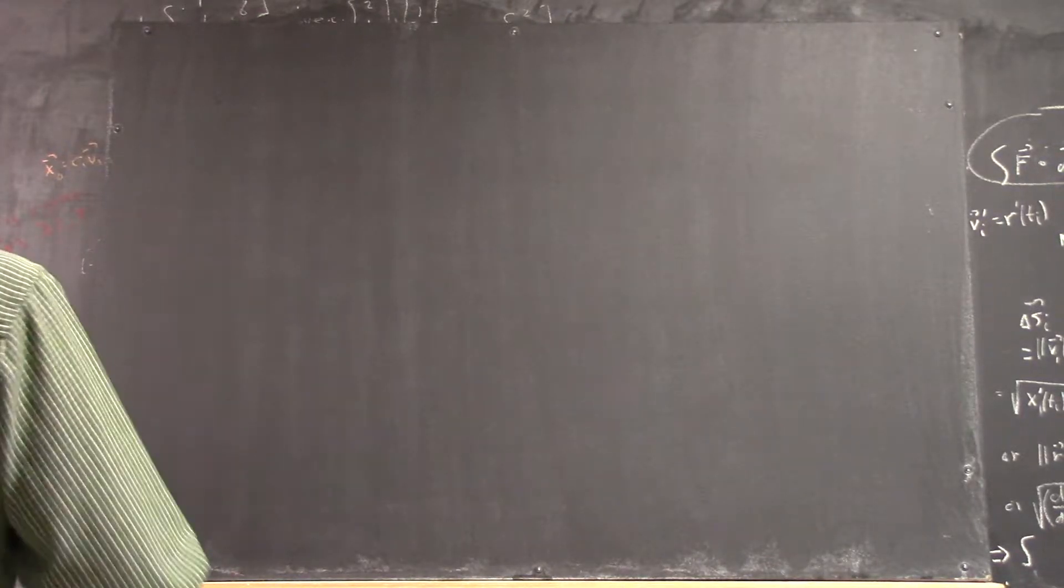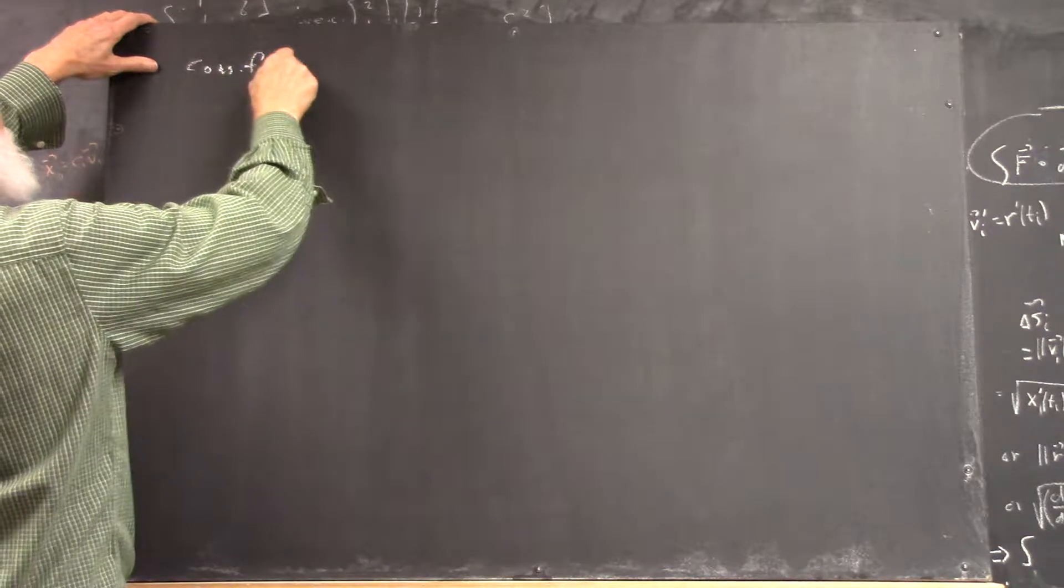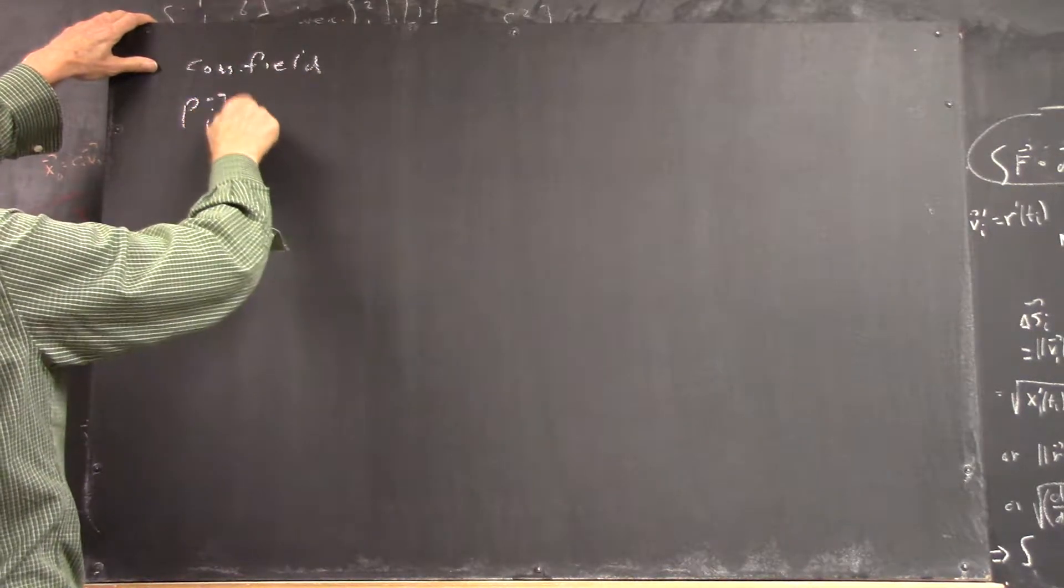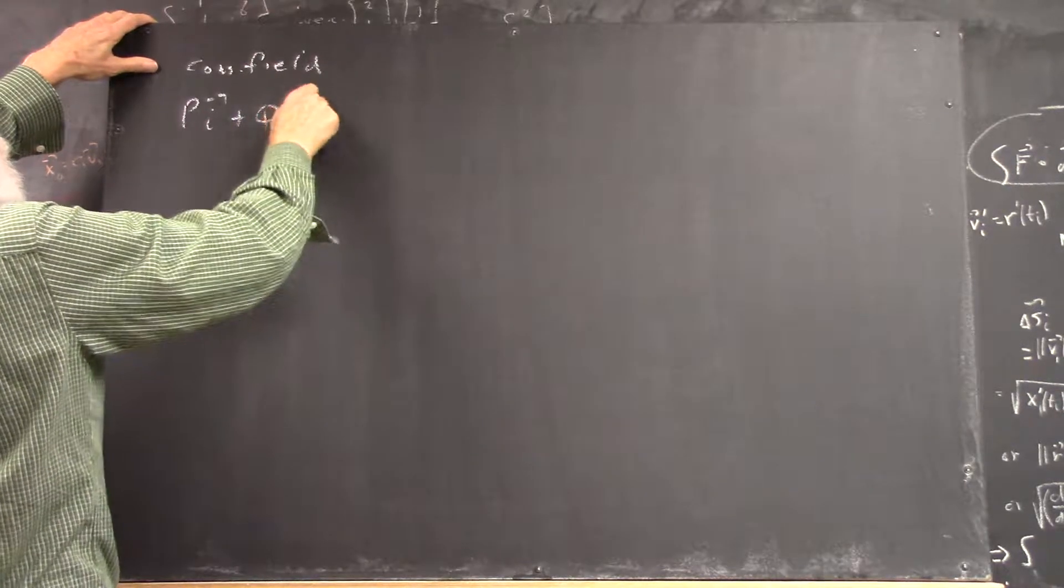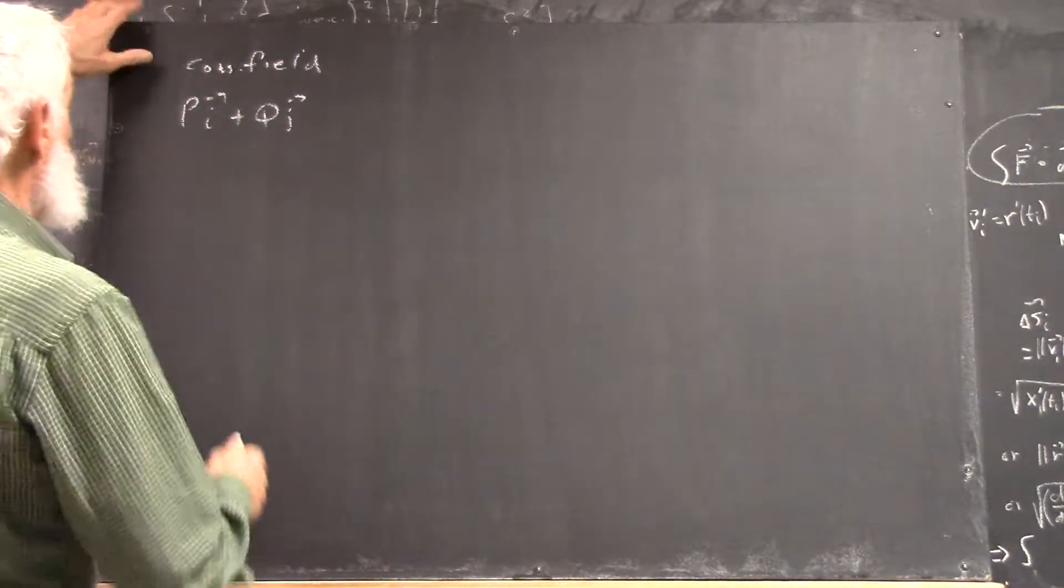Okay, again, a conservative field in just two dimensions is PI plus QJ. If you've got another component, you can do that. It's PI plus QJ.